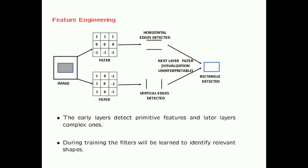One very interesting point about convolutional neural networks is that they perform hierarchical feature engineering. Earlier layers detect primitive features, and later layers combine them to define more complex ones. For example, given an input image of a rectangle with a horizontal edge detector filter and a vertical edge detector filter, the hidden layer produces two feature maps — one detecting horizontal edges and one detecting vertical edges. The next layer filter takes them together and detects the full rectangle.